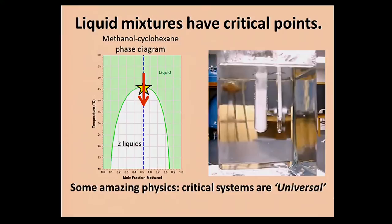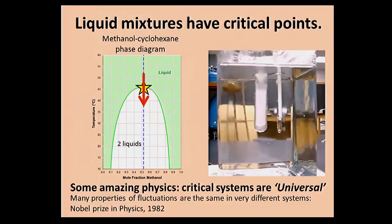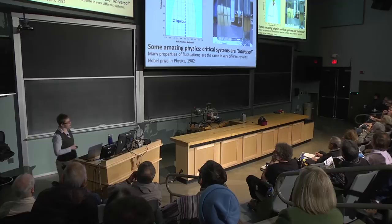Critical systems are amazing for lots of reasons. One of the main reasons is that they're universal. I just showed you three examples of completely different systems, different chemicals, and they all look very similar. In fact, mathematically and physically, there are properties of these systems that are identical — that can be explained by the same very simple theory. The detailed molecular interactions that give rise to where this critical point happens to be don't matter anymore for explaining the types of structures you see. This remarkable discovery was one of the exciting things of the mid-1900s and earned a Nobel Prize in physics in 1982 in theoretical physics.